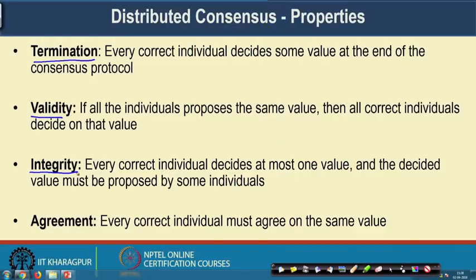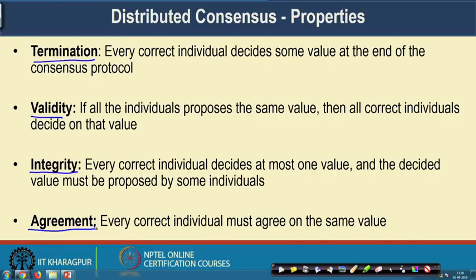The third property is integrity: every correct individual decides at most one value, and the decided value must be proposed by some individual. The integrity property ensures that the consensus value should not deviate from the values which are proposed by individuals in the network — you should not get a value of 20 in the consensus if none of the nodes in the network proposed a value of 20. The fourth property is agreement: every correct individual must agree on the same value. That is the most important property of a consensus protocol — all the individuals in the network must agree on the same value. Whenever they agree on the same value after termination, we say that the system has reached consensus.